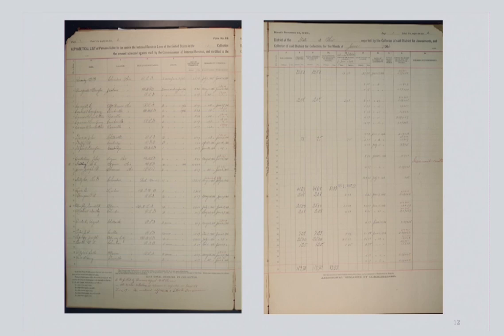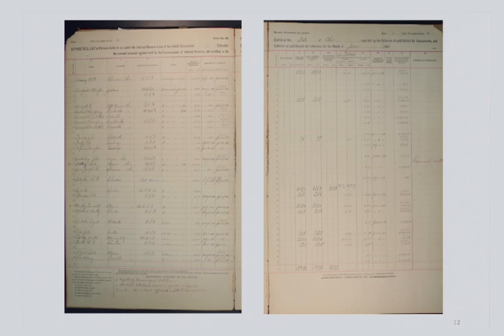These later records may be less likely to have useful information for genealogists, but if the person you were researching owned a business, you may be able to find something of note. These records should be considered for use by historians of business or local historians, of which there is a great deal of overlap with genealogy. The information collected includes the person or business name, their location, the article or occupation being taxed, penalties assessed, and occasional comments by the assessor.